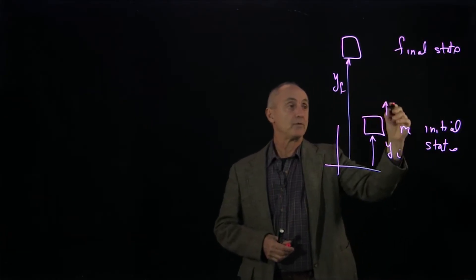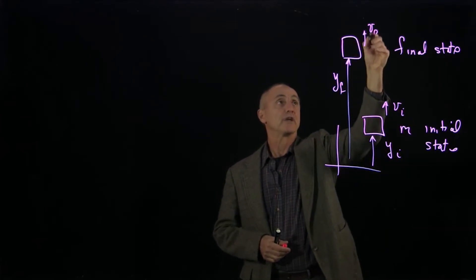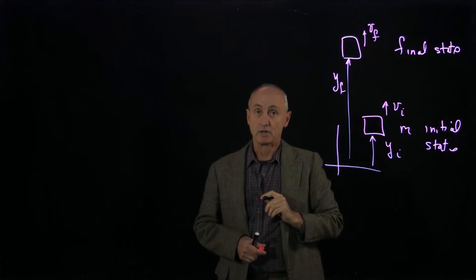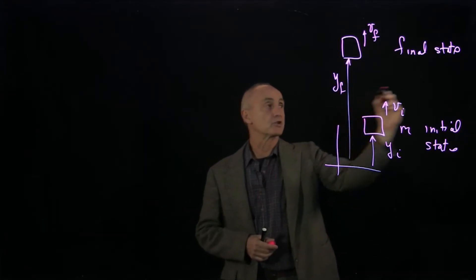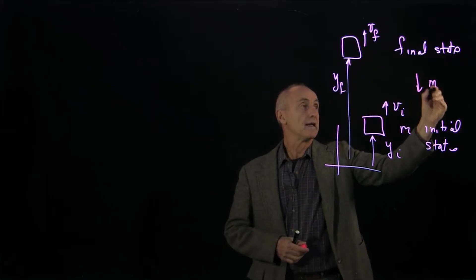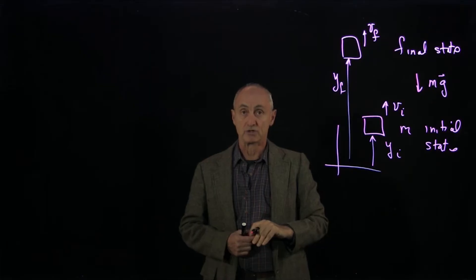And in our initial state, we might have some initial velocity. And in the final state, we might have some final speed. And what we'd like to do now is, we know that if there's a gravitational force mg acting downwards, that this gravitational force is a conservative force.